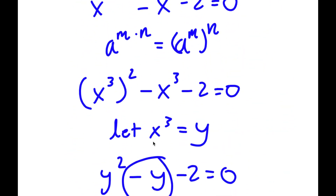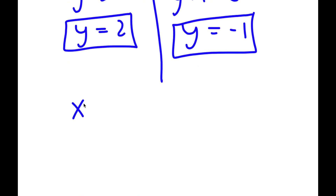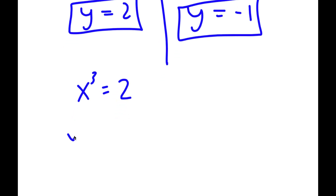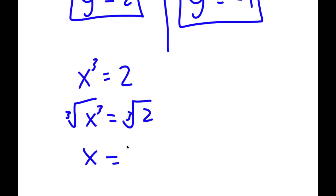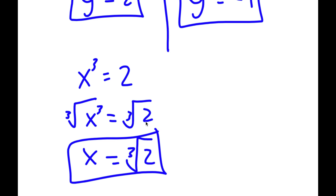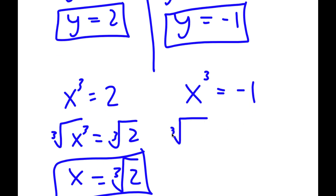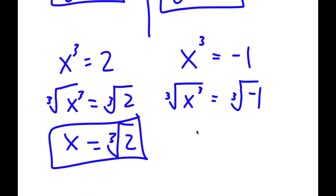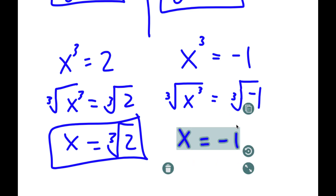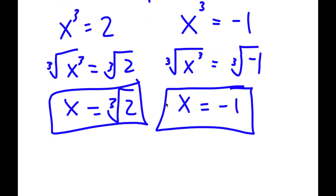Now recall how we let x to the power of 3 equal to y. So if x to the power of 3 is equal to y and we have two values of y, let's first start with y equals 2. So x to the power of 3 equals 2. I'm going to take the cube root on both sides. Cube root of x to the power of 3 is x, so x is equal to the cube root of 2. Now for negative 1, I have x to the power of 3 is equal to negative 1. Taking the cube root on both sides, x equals negative 1. So my two solutions are the cube root of 2 and negative 1.